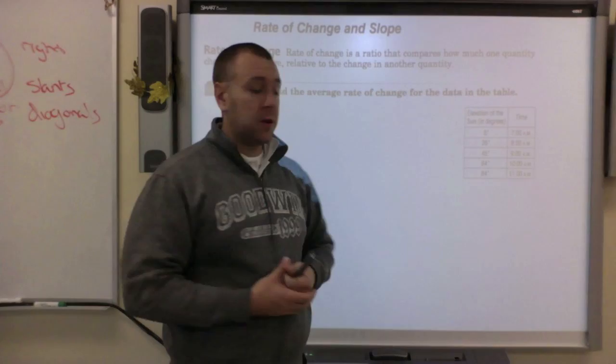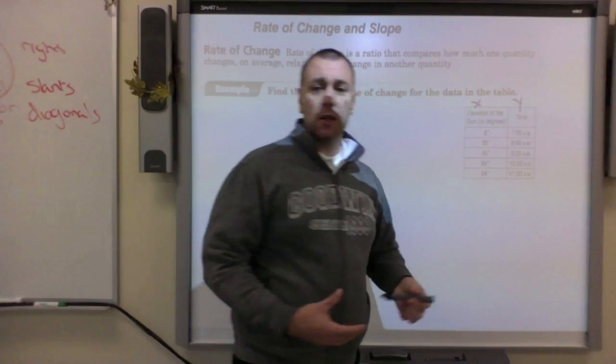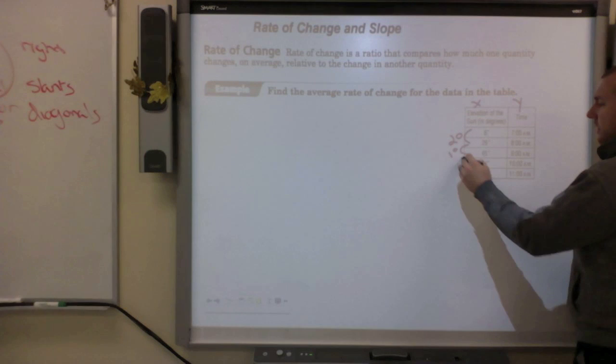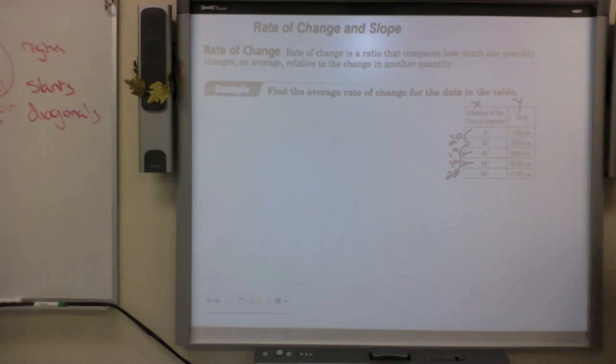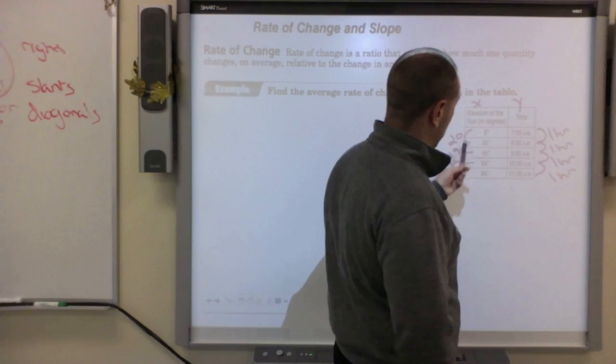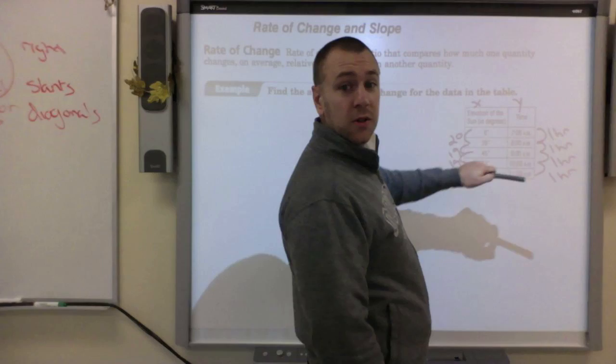In this example, we give you a table. The first data set went up 26, this one up 19, this went up 19, this one up 20. The Y's are going up about every one hour or 60 minutes, every one hour. The rate of change is how much is it changing over time.